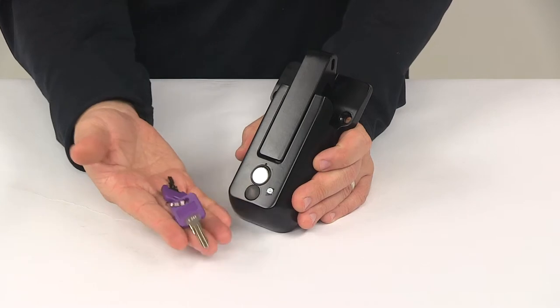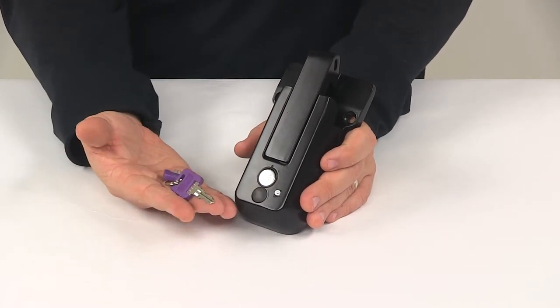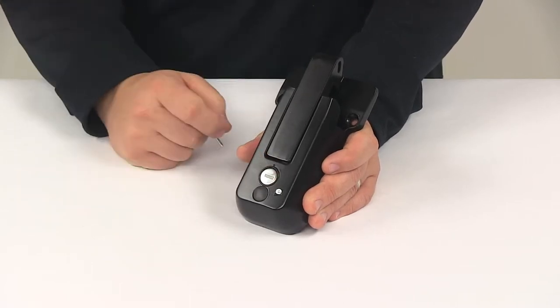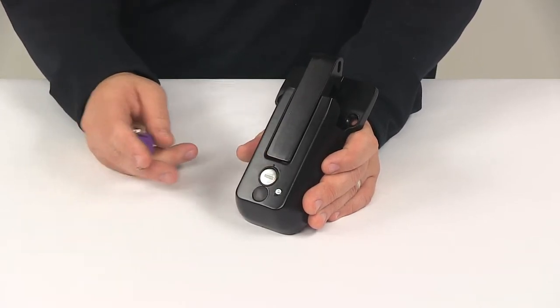It comes with two keys and offers a keyed-alike option. The keyed-alike option means that the lock core can be made to match other GlobalLink locks for convenient one-key operation.